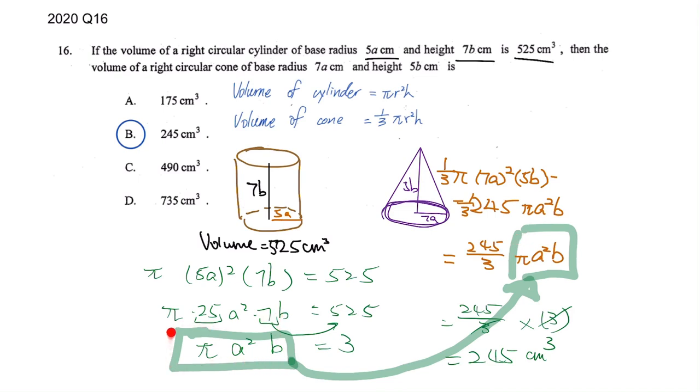And then because here we could not do anything further, so that's why we had πa²b and then that value 3 we just substitute it back. And then the rest of the thing you can click calculator directly.